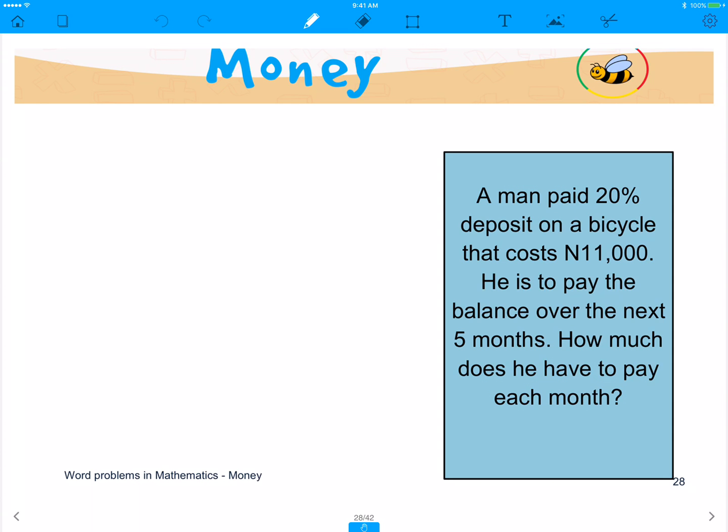To solve this question, the first thing we need to do is to find what was paid as the deposit, then to find what the balance is after paying that deposit, and then to divide that balance over the number of months that the balance will be spread. So we are told the balance will be paid over 5 months.